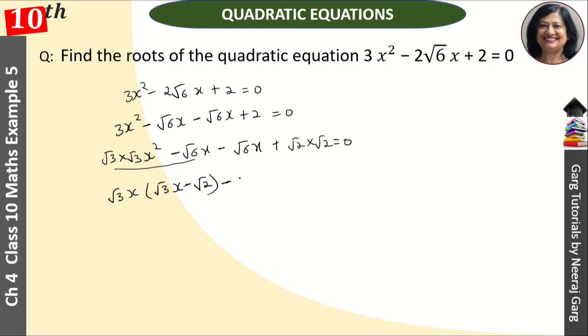And here, what is common here? Root 2 is common, here will be root 3x and minus sign is common, here will be minus and here will be root 2, right? So, this is root 3x minus root 2 in one bracket and in the other bracket also, root 3x minus root 2.